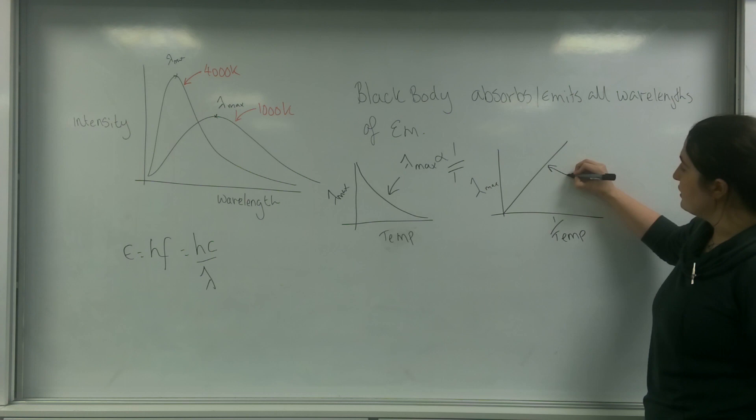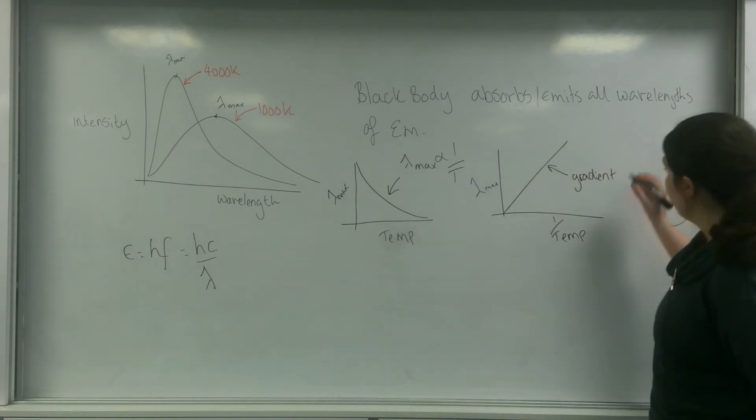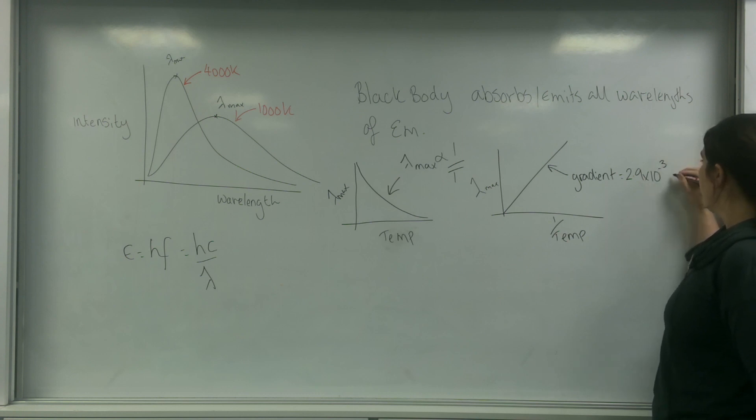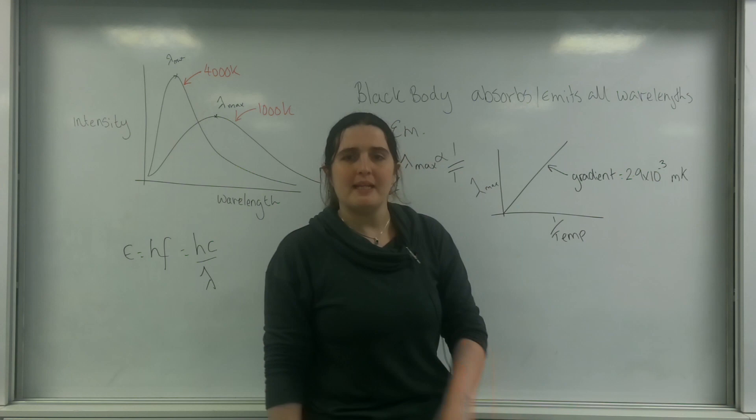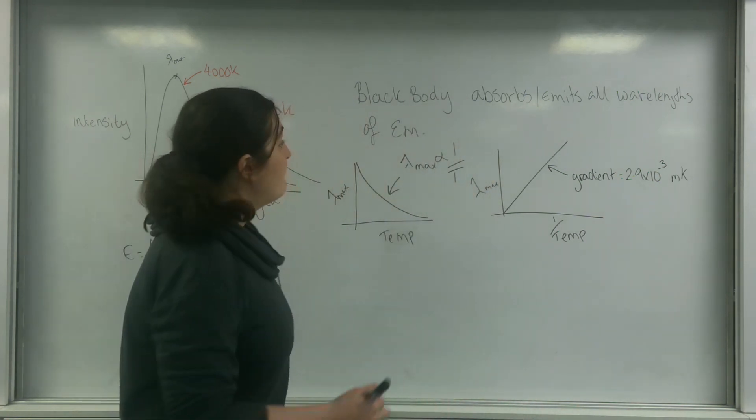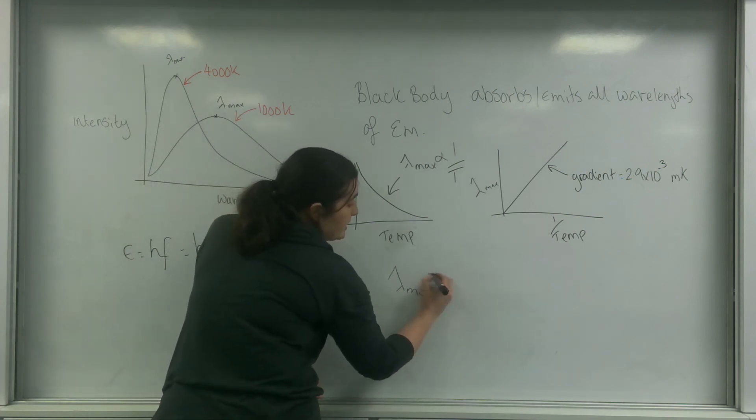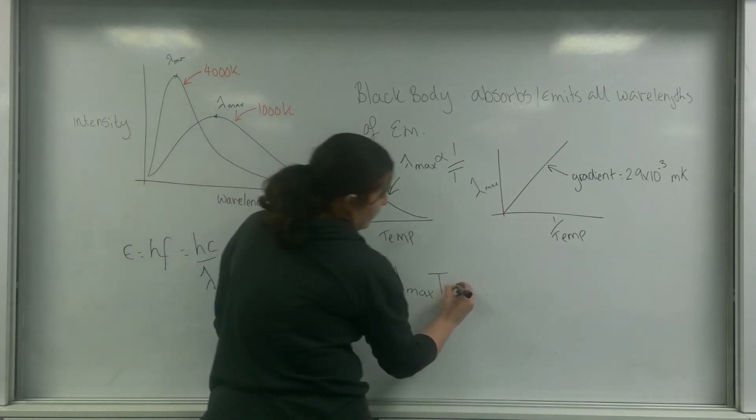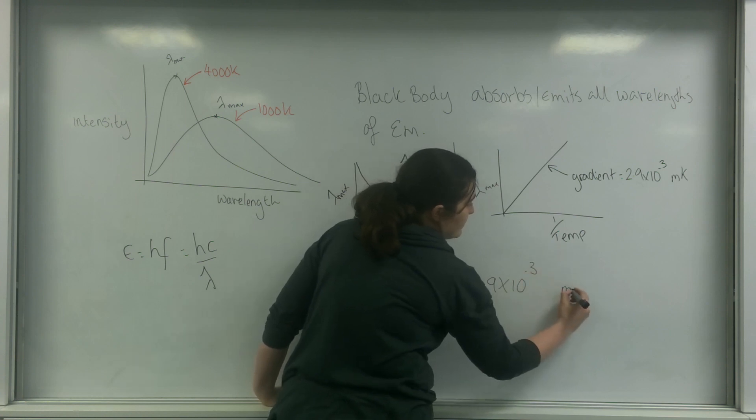The gradient of this graph, incidentally, was 2.9 times 10 to the minus 3 meters Kelvin. Please be aware that is meters, not milli. Which leads me on to Wien's Law. Wien's Law is that lambda max times by the temperature is 2.9 times 10 to the minus 3 meters Kelvin.